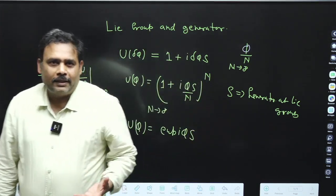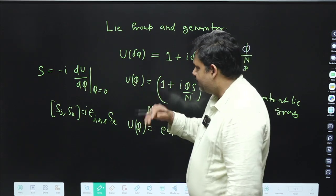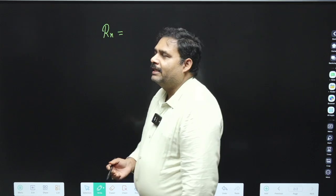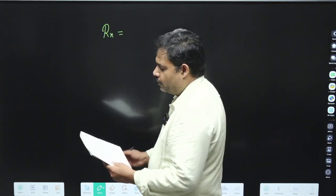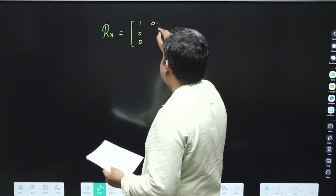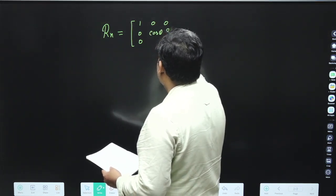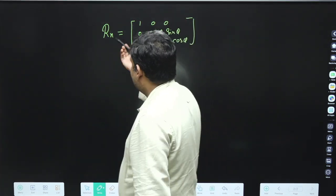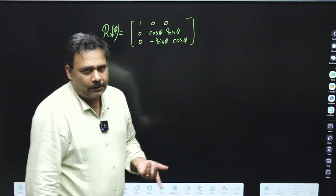We can understand all these things with one very clear example — and this may appear in your exam. Suppose we have a rotation matrix Rx(φ) representing rotation about the x-axis with parameter φ. This matrix can be written as: first row (1, 0, 0), second row (0, cos φ, sin φ), third row (0, -sin φ, cos φ). Given this rotation matrix, we need to find its generator.